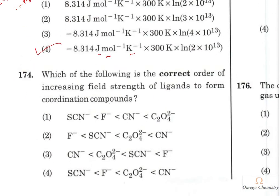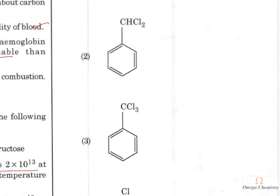Question 166: Identify the correct order of increasing field strength for ligands. Thiocyanate is the weakest, followed by fluoride, then acetate, then cyanide. The fourth option is the right answer.